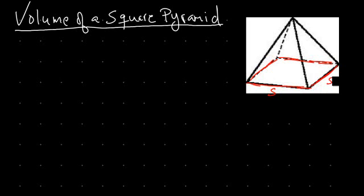The volume of a square pyramid is V equals one-third s squared times the height. In the previous video we talked about how if a shape keeps a consistent shape as it rises, the volume is simply the area of the base times the height. Although it's one-third s squared times the height here, we still have that intuition of the area of the base times the height.